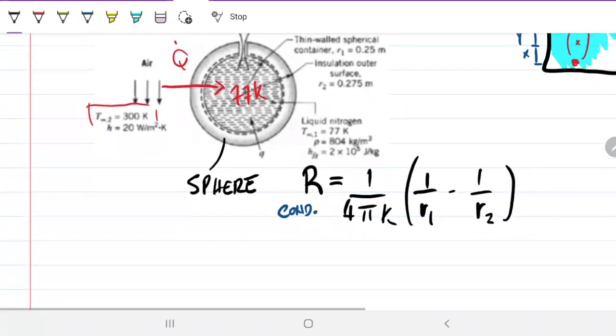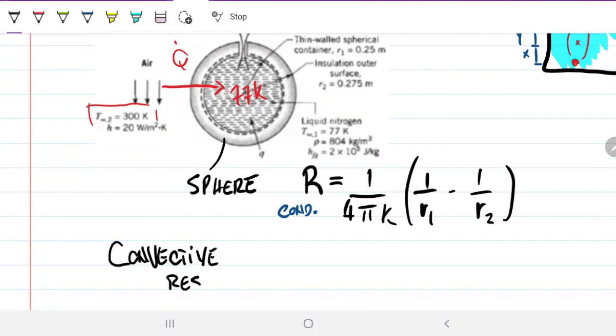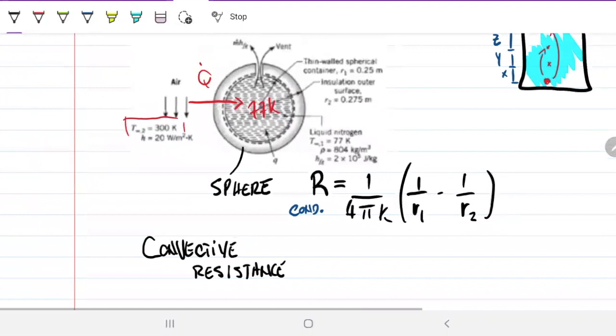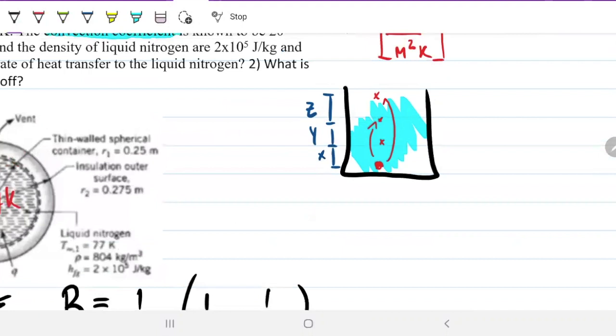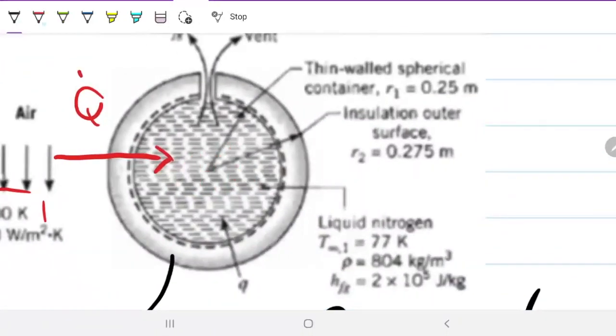The second thing that's new is that now we have a convective resistance. If you guys recall the problem we just did, we had steam, we have a steel pipe, and we had the insulation, the other insulation, and then we had air. If you think about it, for my energy to leave the air outside and actually reach right in the middle of the nitrogen, it has to go through the air, the insulator, and then through all this nitrogen here. So although it doesn't really depend on temperature, it does have the fact that there's matter there in the way of energy traveling does create a resistance.